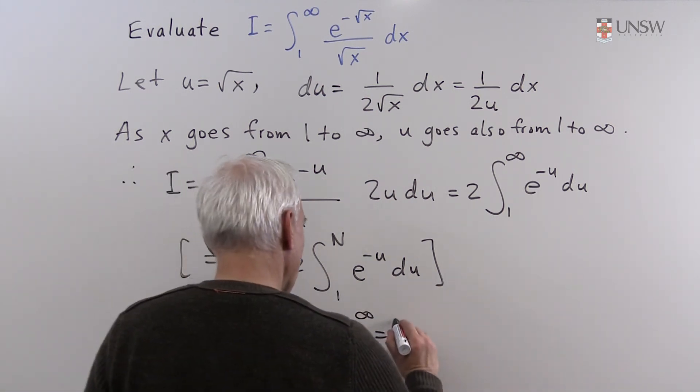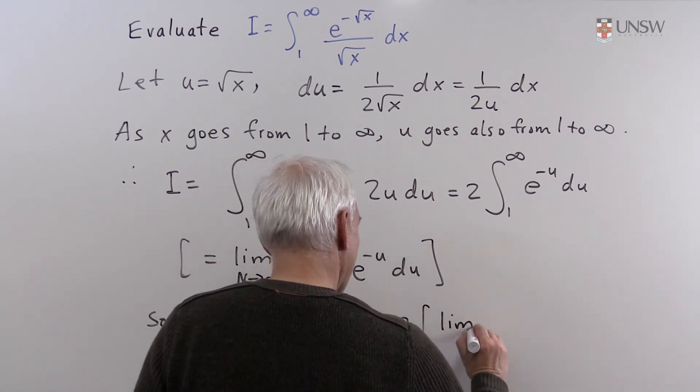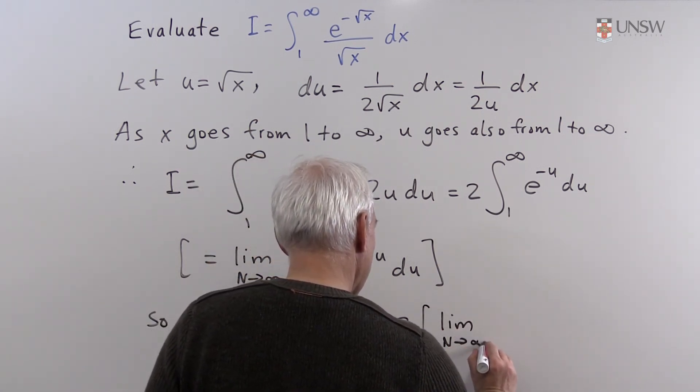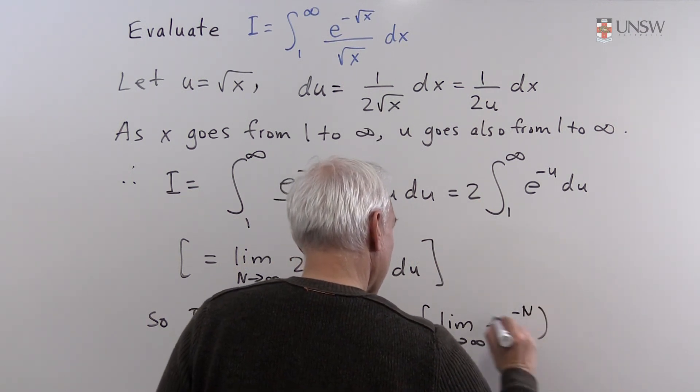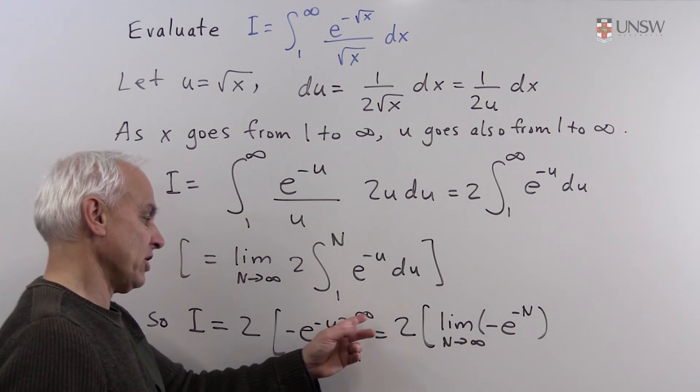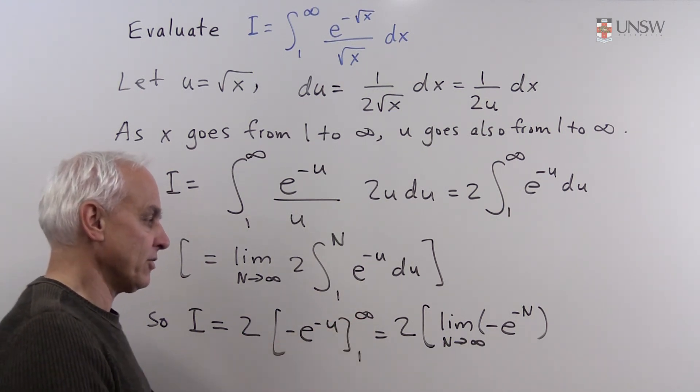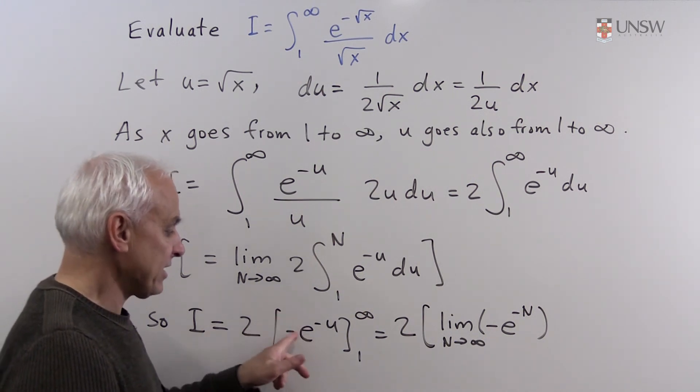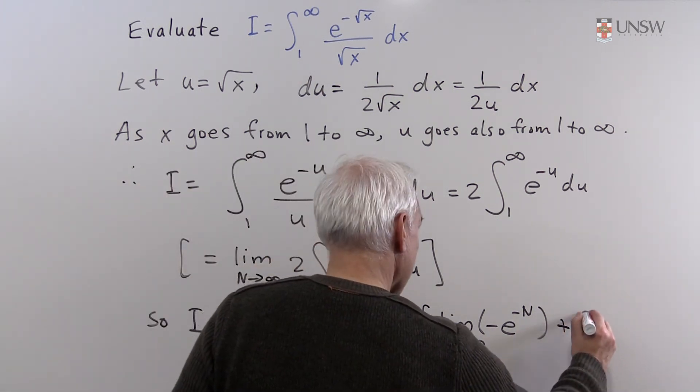So this is two times the limit as N goes to infinity of minus e to the minus N. That's essentially the value when you substitute infinity. It's really a limit as N goes to infinity. Minus the value at one, so that will be plus e to the minus one.